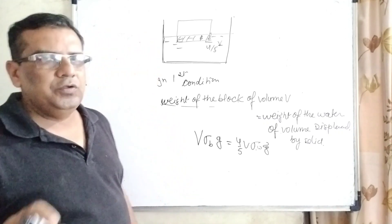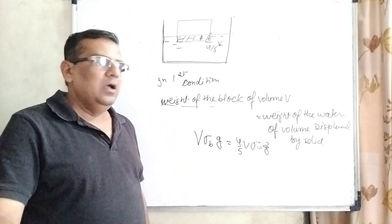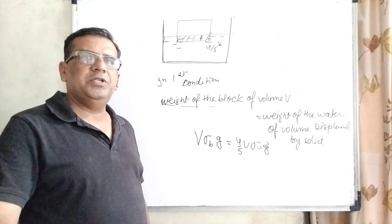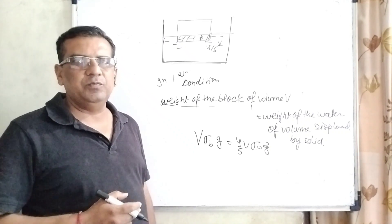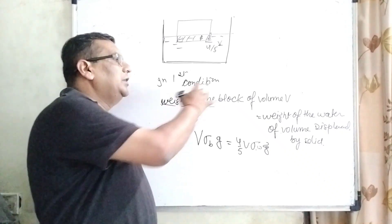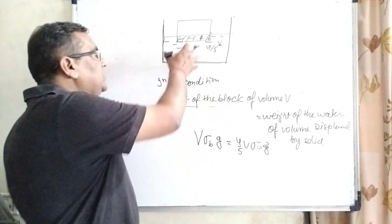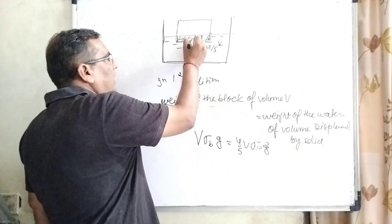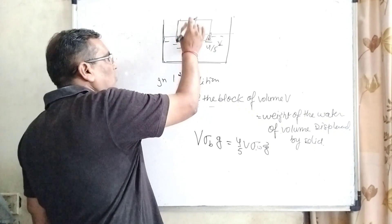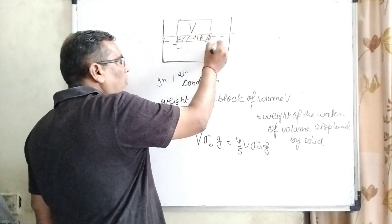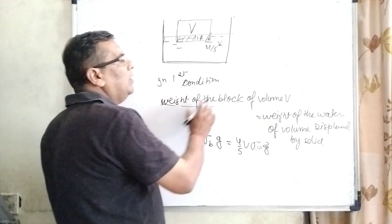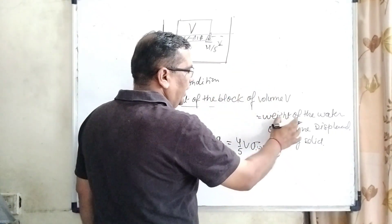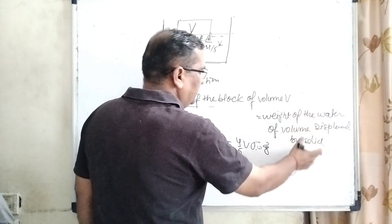This question we solve using Archimedes principle. What is Archimedes principle? Any object which is fully or partially immersed in the liquid, its weight gets reduced by the weight of the liquid displaced by it. So therefore you can see that this is the block and its volume, it is considered total volume is V. And 4 by 5 V is displaced.